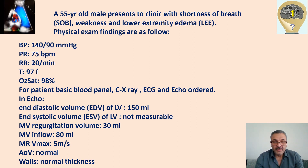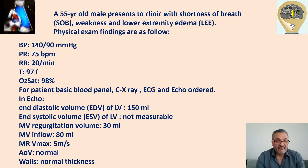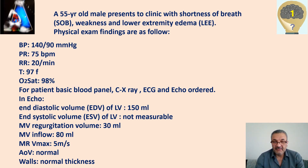There was a significant MR with peak velocity 5 meters per second. The aortic valve was generally except sclerotic, no stenosis, no regurgitation, and wall motion and thickening was normal.